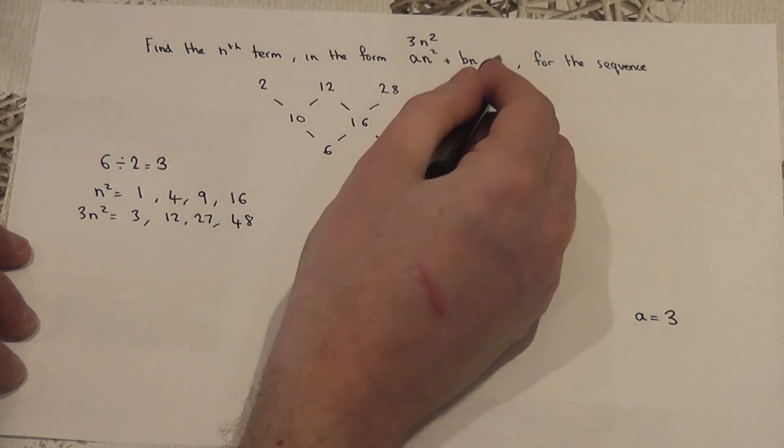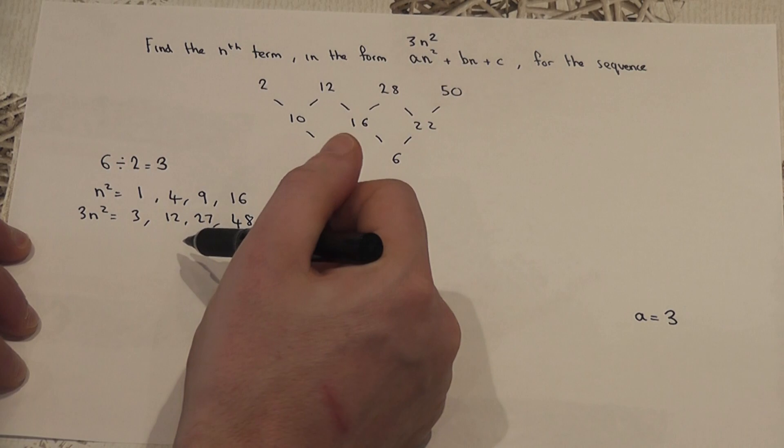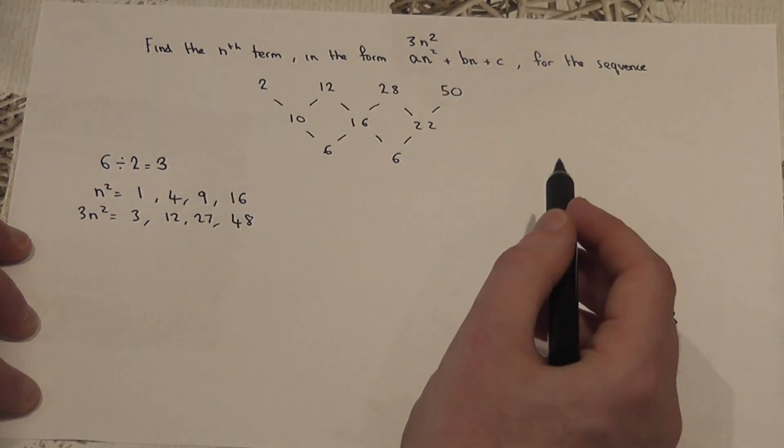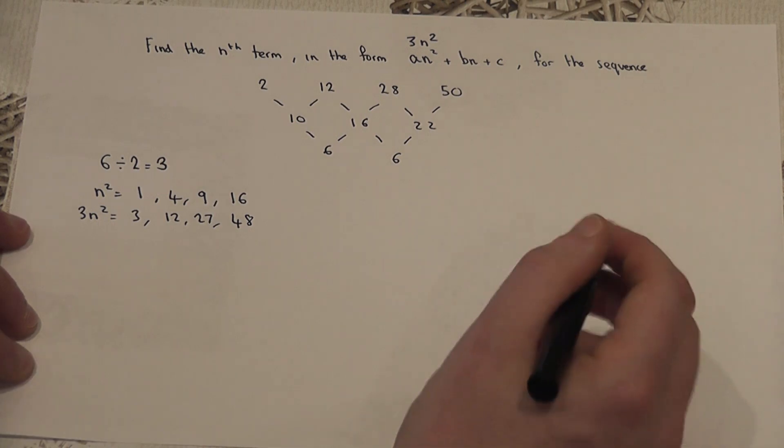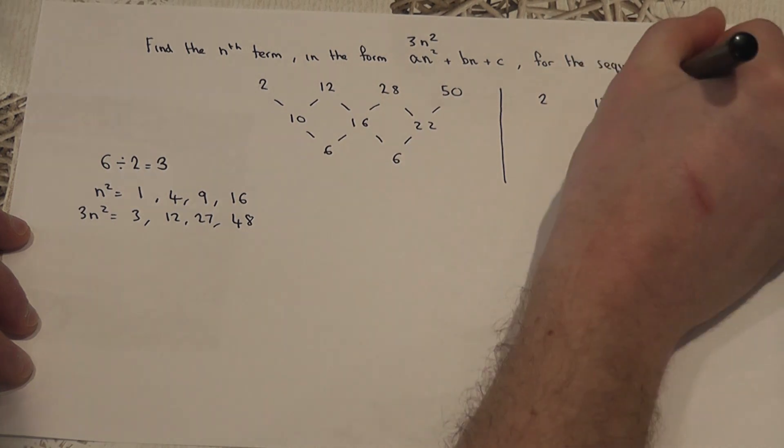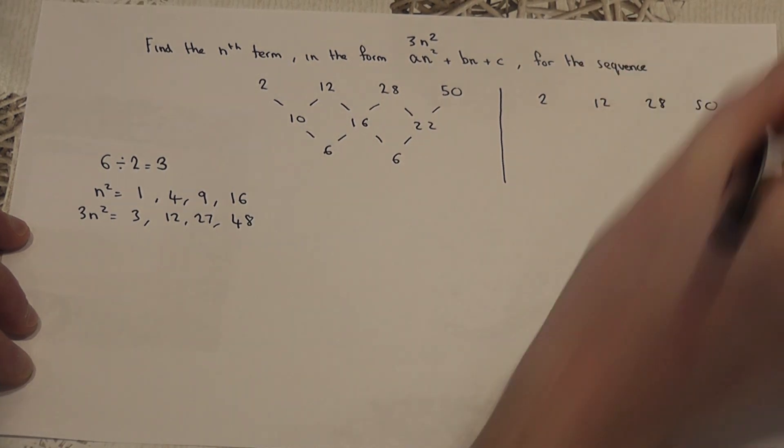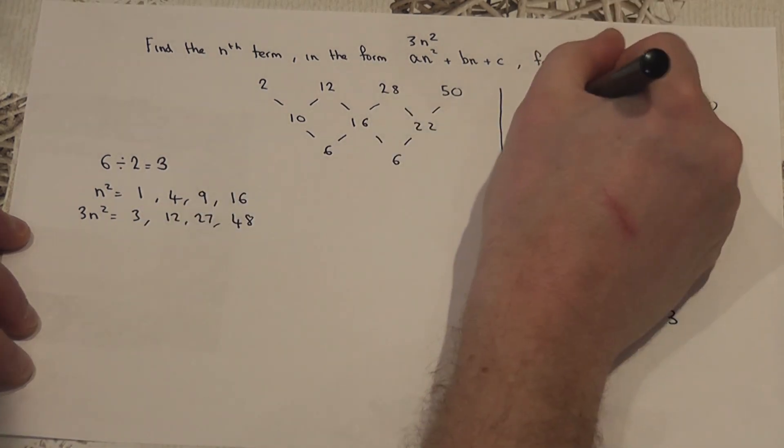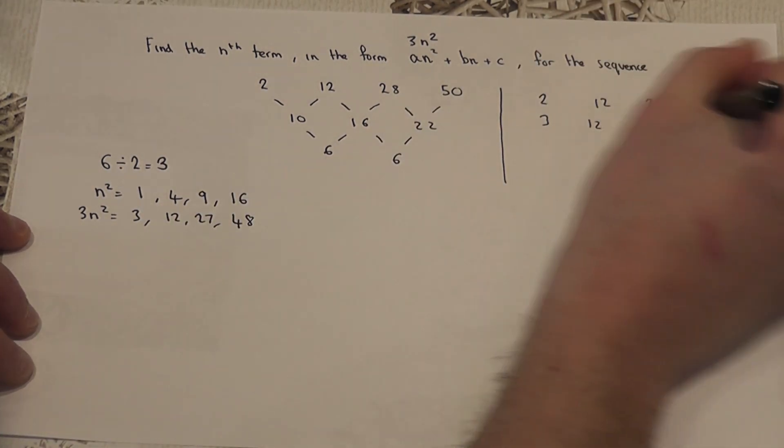So, to find what b and c are, I remove, or I take away, 3n squared from the original sequence and see what's left over. So, the sequence we had originally was 2, 12, 28, and 50. So, if I remove the 3n squared bit, so I remove 3, 12, 27, and 48.